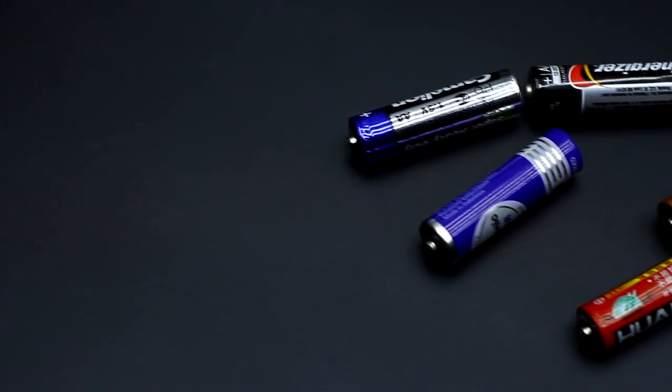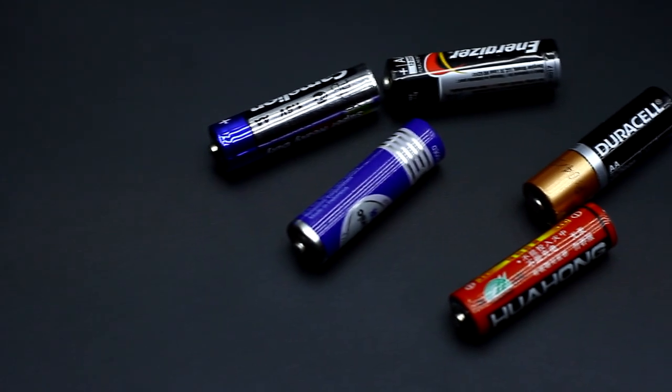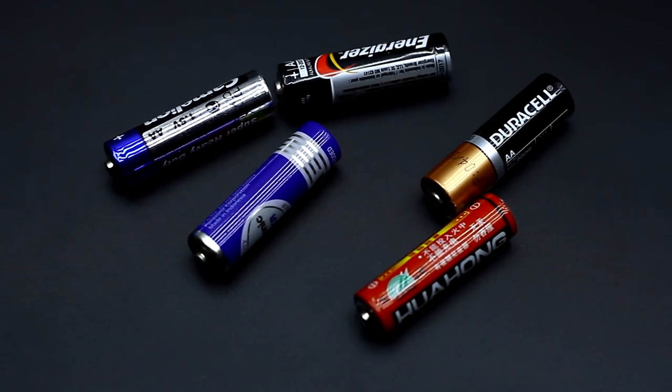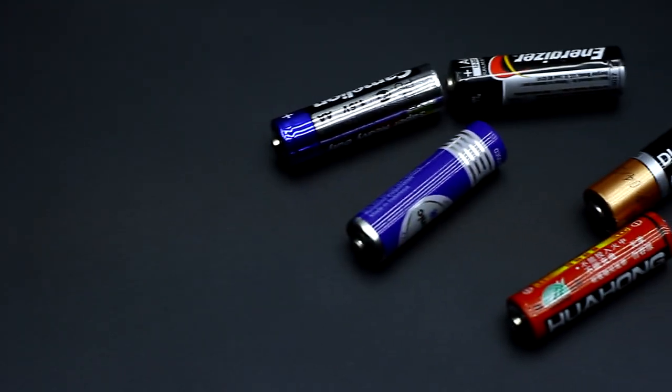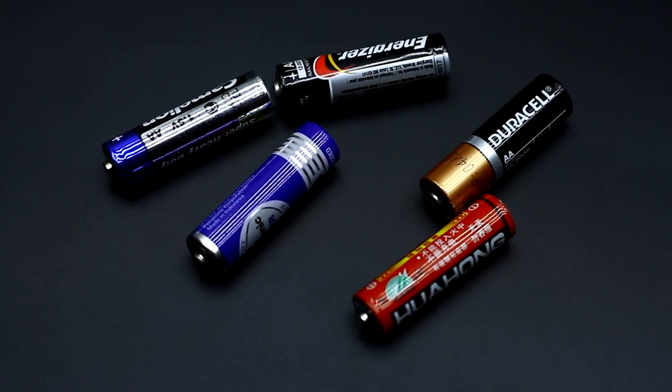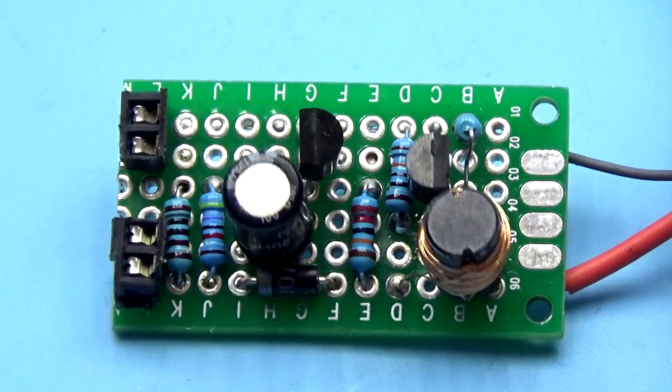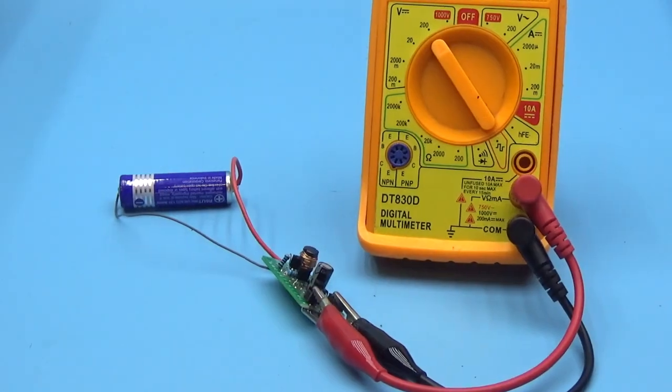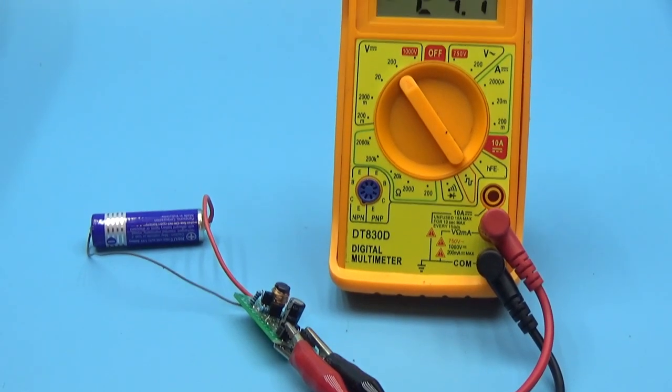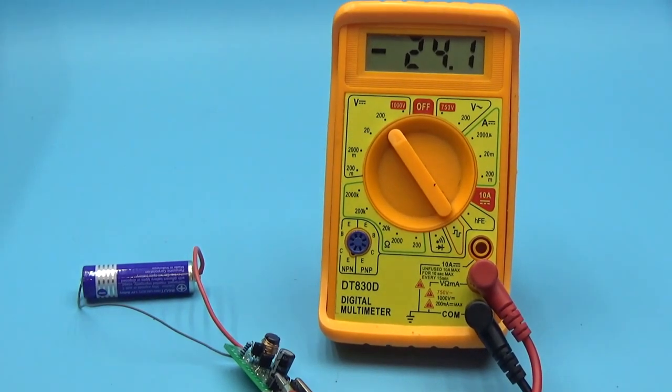It could be a regular 1.5V battery or a 1.2V accumulator. In principle, the form factor of the battery isn't important. The circuit is very simple and doesn't contain rare components. Built on just a pair of transistors. This is a boost voltage converter. The input voltage is supplied from the battery and the output is about 30V. It all depends on the inductance coil.